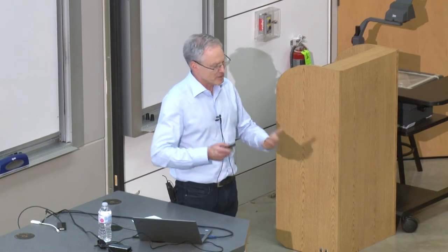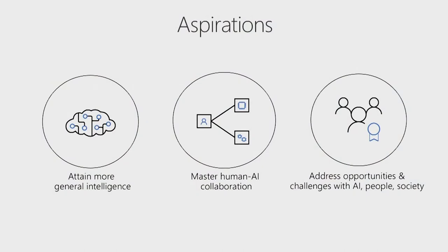Today I want to pause and talk about aspirations for moving forward in AI. We built a new lab called Microsoft Research AI about a year and a half ago, taking many of our AI folks from our Redmond lab — our Starship lab — and built a separate AI lab around five aspirations. I'll mention three: first, attain more general intelligence; second, master human-AI collaboration, which is a critical area; and third, address opportunities and challenges with AI, people, and society.